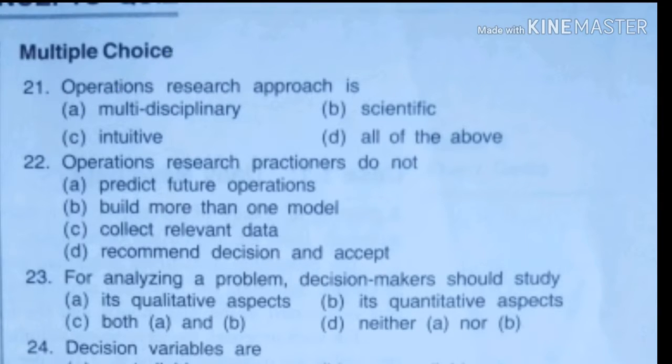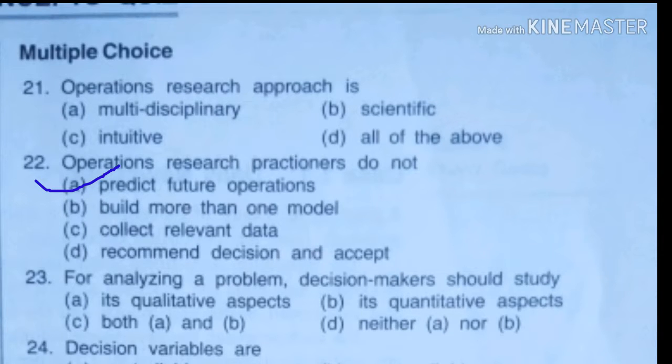Question 22. Operations Research practitioners - this is a spelling mistake, P-R-A-C-T-I-T-I-O-N-E-R, practitioner - do not: option A predict future operations, B build more than one model, C collect relevant data, D is recommend decision and accept. Correct answer is A, predict future operation. What is predict future operation? Means replanning, advanced planning.